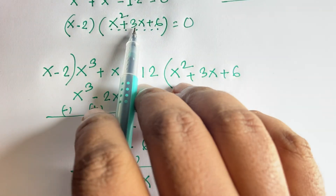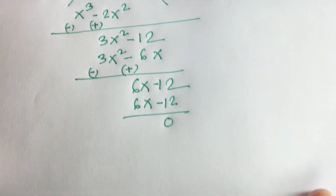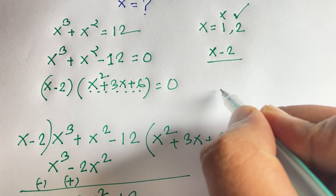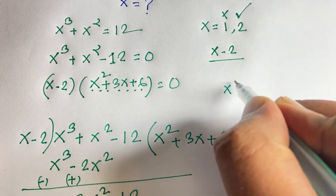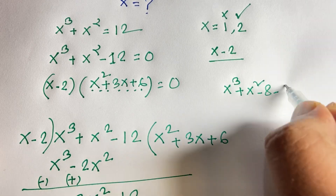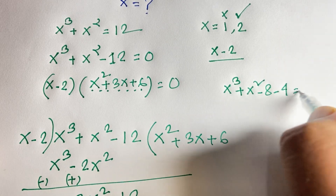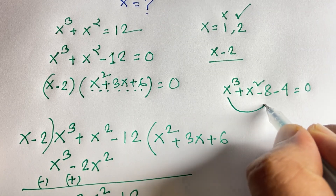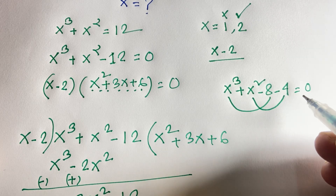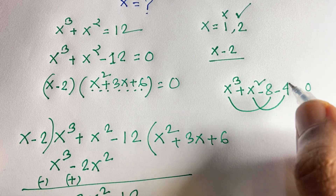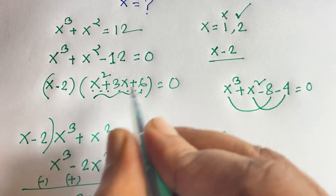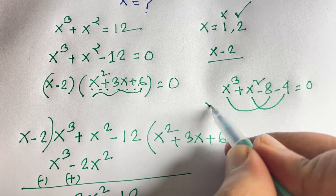You can see that x minus 2 equals 0 gives x equals 2. You can also solve this question another way: write x to the power 3 plus x squared minus 8 minus 4, then use the cube minus b cube formula and a squared minus b squared formula, and x minus 2 comes out as a common factor.